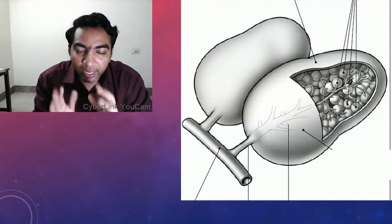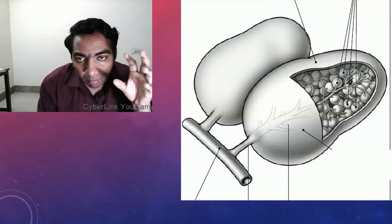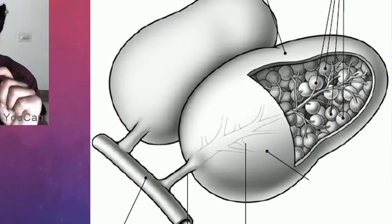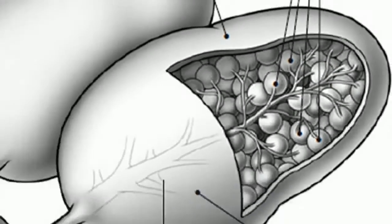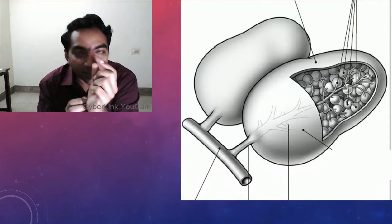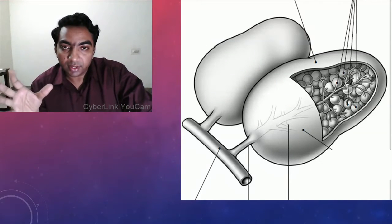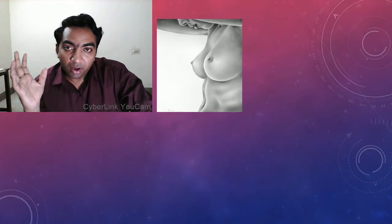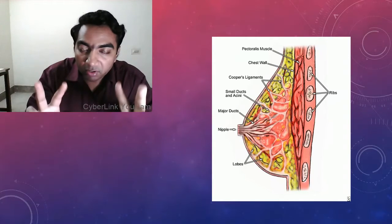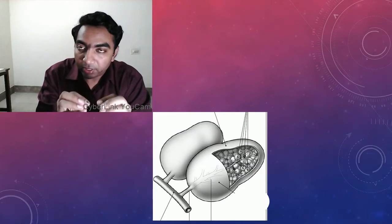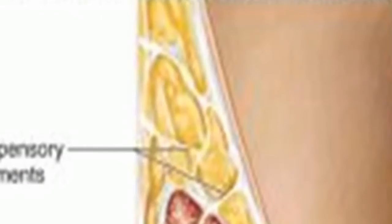Coming to a closer view of the lobule, we can see the lobule is filled with acini. When we come much closer, we see that the small lobule and the ductule form the terminal duct lobular unit (TDLU), which is the basic functional unit of the breast. From the fat of the breast we see fat lobules, and when we come closer we see that the fat lobules are interspersed within the Cooper's ligament.